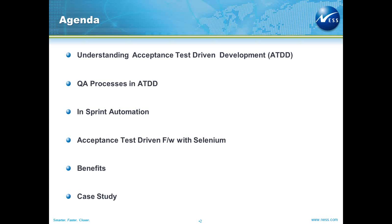Let's go through the agenda. I'll be explaining what exactly we mean by acceptance test-driven development — the acronym is ATDD. What should be the QA processes in ATDD? And how to achieve in-sprint automation. Automation is one of the best practices in the agile world, and we would focus more on how to get things automated within the sprint itself.